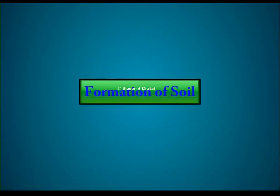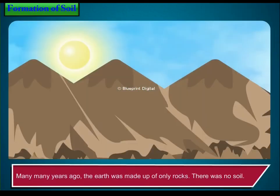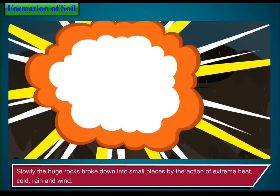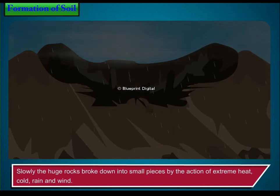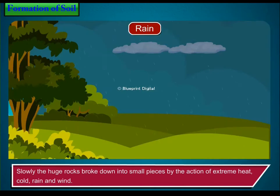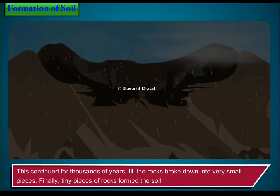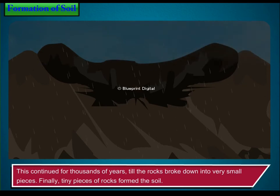Formation of Soil. Many, many years ago, the earth was made up of only rocks. There was no soil. Slowly the huge rocks broke down into small pieces by the action of extreme heat, cold, rain and wind. This continued for thousands of years till the rocks broke down into very small pieces. Finally, tiny pieces of rocks formed the soil.